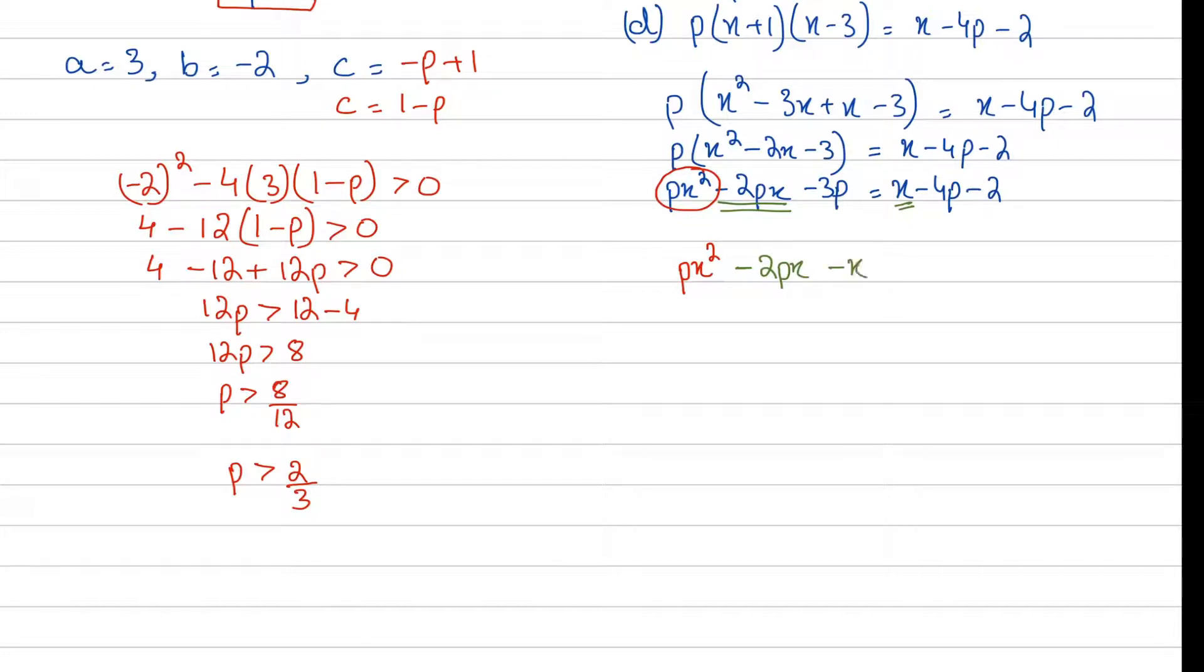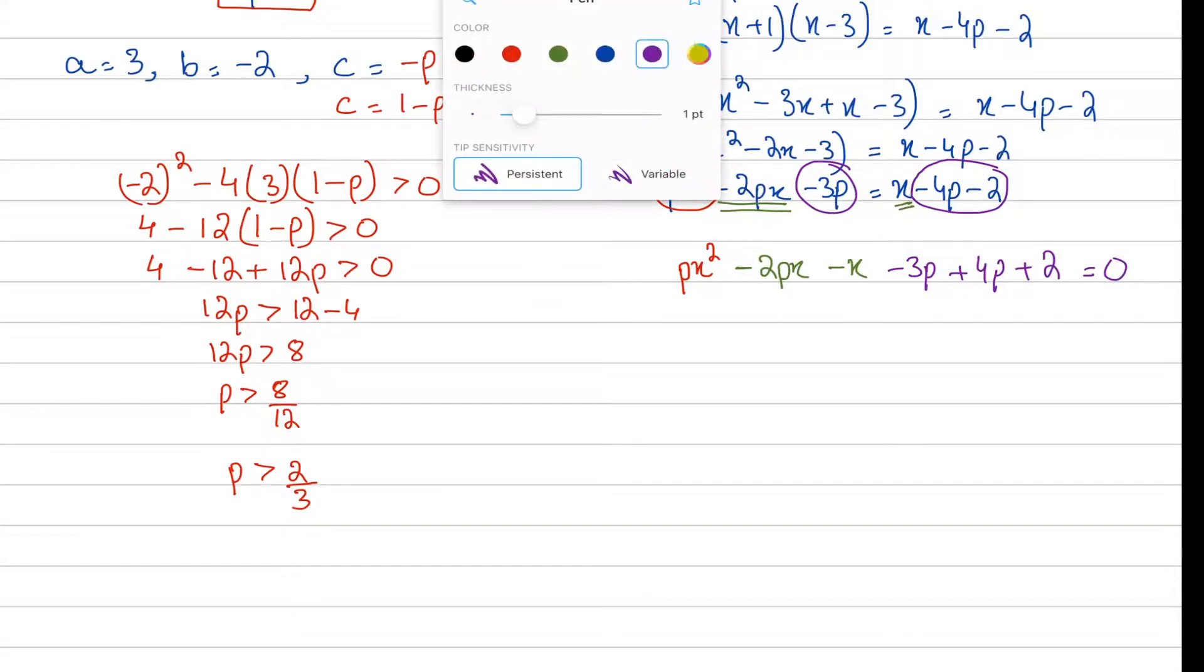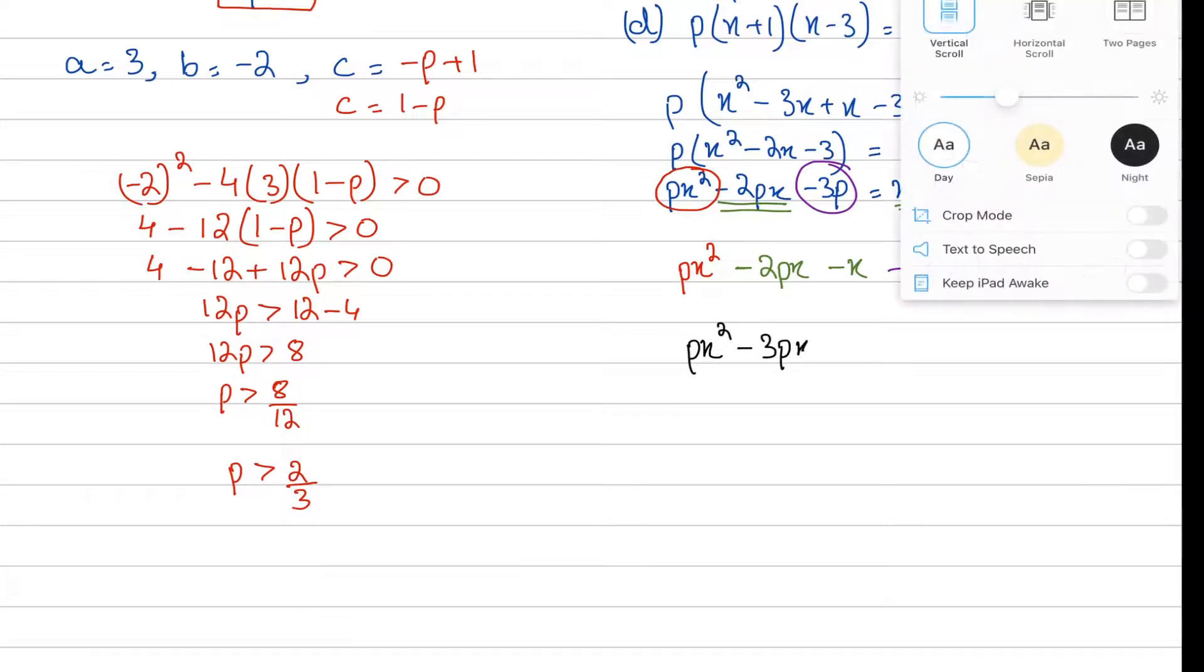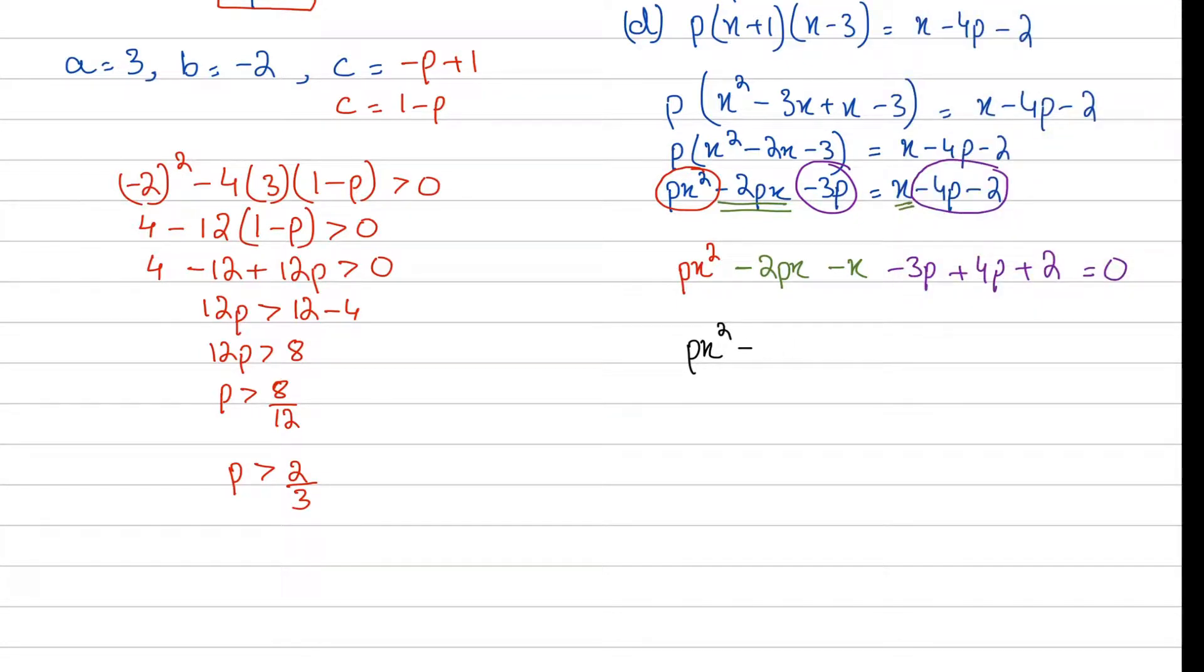Now p as it is: px squared minus 2px minus 3p equals x minus 4p minus 2 carried forward. When I rearrange it, px squared is our first term. Let's highlight the x terms: minus 2px and x. When I rearrange, it's minus 2px minus x. Then we see constants: minus 3p. When you bring minus 4p and minus 2 to the left, it's plus 4p plus 2.